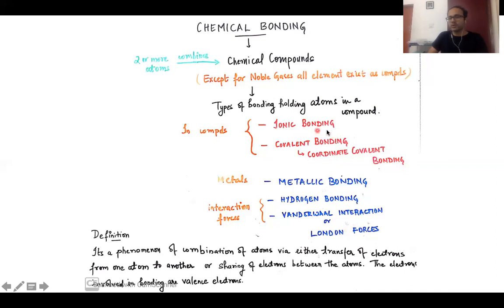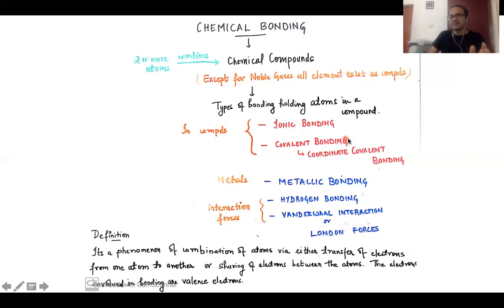In brief, we will look into ionic bonding and in more detail into covalent bonding, where we will discuss theories like Lewis theory, VSEPR theory, VBT theory, and the molecular orbital theory. Ionic bonding will be discussed briefly in a peripheral manner without too much detail.